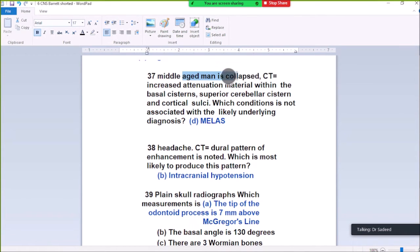Question 37. Middle-aged man presents with acute onset of increased attenuation within the basal cisterns, superior cerebellar cisterns, and cortical sulci. This is diagnosed as subarachnoid hemorrhage. Which condition is not associated with subarachnoid hemorrhage? MELAS. What is not associated with subarachnoid hemorrhage is MELAS. All other conditions were associated with it, but not MELAS.